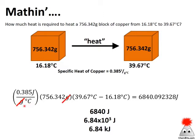I still have degrees C, so I need to account for the temperature change. Remember, it's a change in temperature: 39.67°C minus 16.18°C. Those units cancel nicely as well, and I'm left with 6840.092328 joules. I hope everyone noticed that — that is a ridiculous number because it has way too many significant figures: ten significant figures.